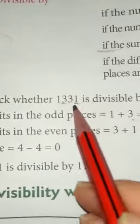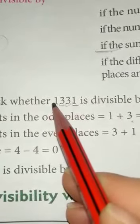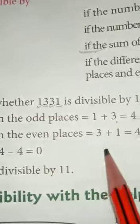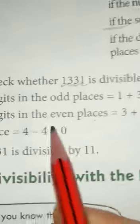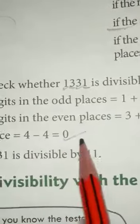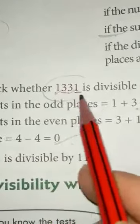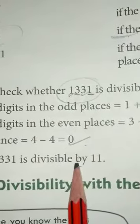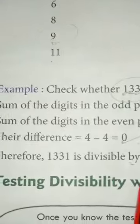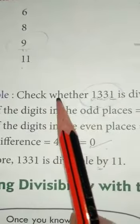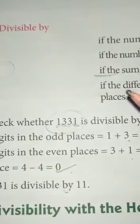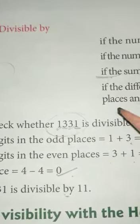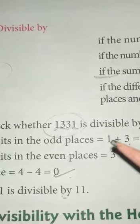In the even places the digits are 3 and 1, so 3 + 1 = 4. Now we subtract: 4 − 4 = 0. Since the result is 0, the whole number 1331 is divisible by 11. Children, you need to understand and learn all these rules so you will be able to check whether a particular number is divisible by any number.